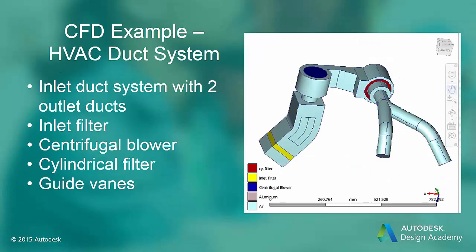The CFD example model is an HVAC duct system. The system uses a centrifugal blower to force air through the ducts. There is a filter at the inlet to trap incoming dirt particles and a cylindrical filter after the blower to keep dirt from blowing out the exit duct legs. Three guide vanes are used to direct the flow around the inlet duct bend without introducing large recirculation regions typical of elbow flows.